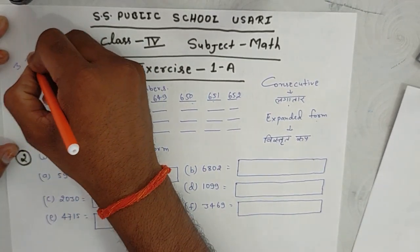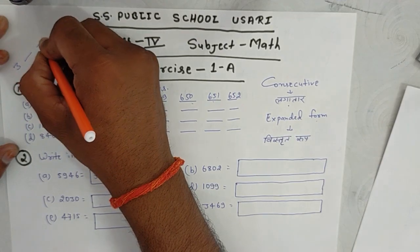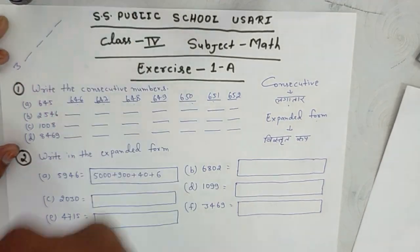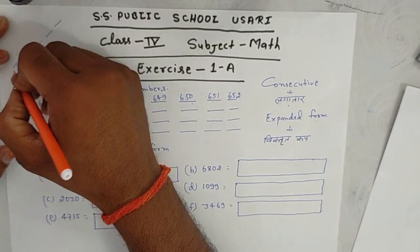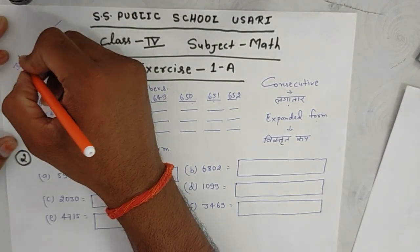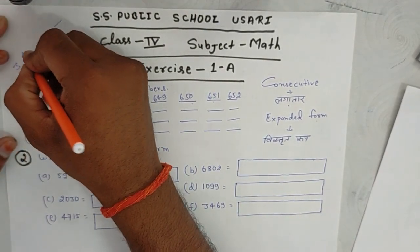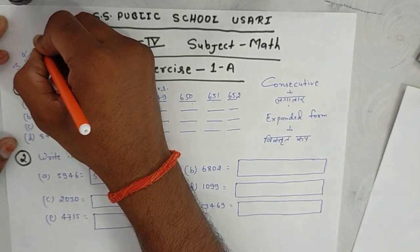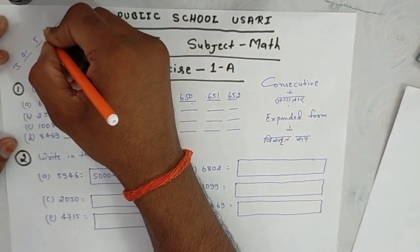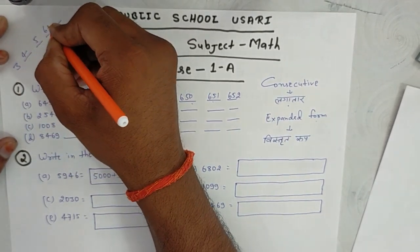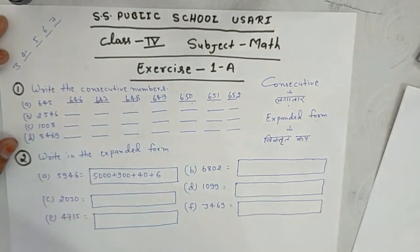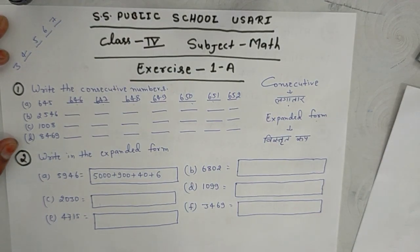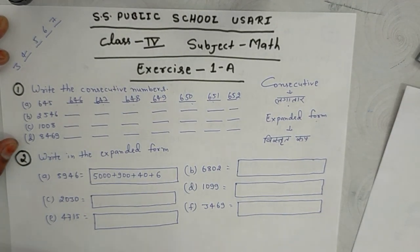Here we write the consecutive numbers 4 times. Starting from 3: 3 is followed by 4, 5, 6, 7. This is how we fill consecutive numbers.